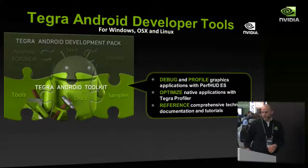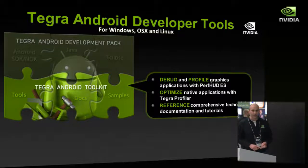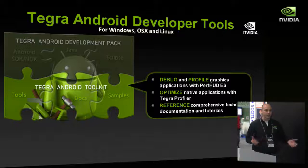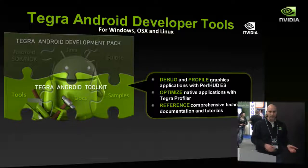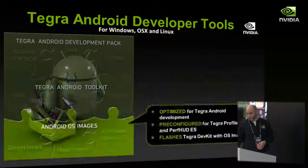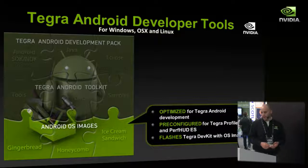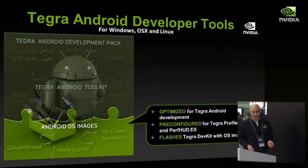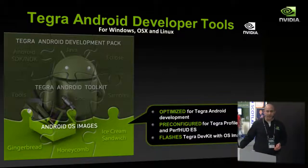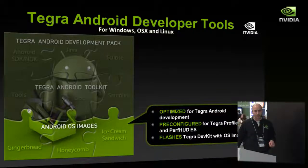The second thing we offer is the Tegra Android toolkit — everything specific to Tegra. You get the tools, documentation on what's different about Tegra and how you can optimize for it, and you also get the samples. The last thing you get is Android OS images for the last three releases: Gingerbread, Honeycomb, and Ice Cream Sandwich. You can use these on your reference platforms — these are not meant for your OEM consumer devices.